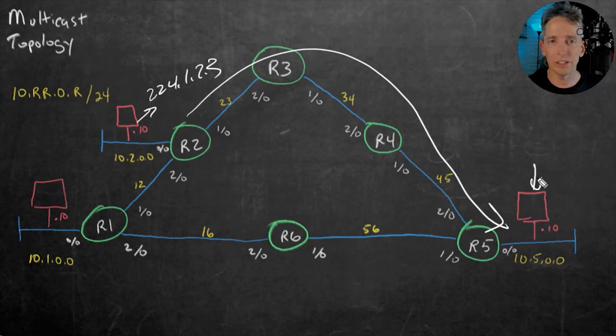And the shortest path tree can be built if it's sparse mode, or if we're using source-specific multicast, we got a shortest path tree to begin with. So he sees the traffic. But what about the other devices on that same network segment? We might have like 40 or 50 or 100 other devices on that same VLAN. Do they all want to receive that traffic? The answer is probably not. Maybe there's a few of them, but certainly not all of them.